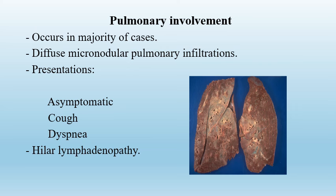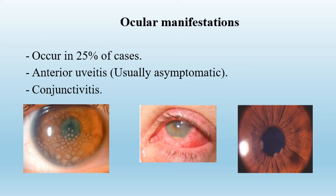Pulmonary involvement occurs in the majority of cases. It may be asymptomatic and discovered incidentally, or may be symptomatic, presenting with cough and respiratory distress. It is characterized by diffuse micronodular pulmonary infiltrations and is usually associated with hilar lymphadenopathy. Ocular manifestations occur in 25% of cases, mainly anterior uveitis, which may be asymptomatic or present with red eye and conjunctivitis.